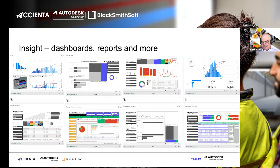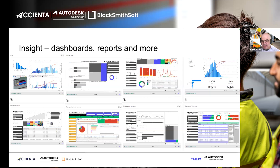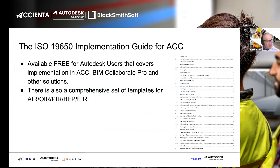Now let's look at the outputs. This is a small screenshot of the possible reports that can come out of the system. All the data we've discussed is available for people to extract, work with, and create business intelligence dashboards. You can see S-curves, model interaction reports, issue tracking, cost reports, and many other required reports. Because these rely on business intelligence tools, you can even bring in data from outside ACC to enrich your reports.